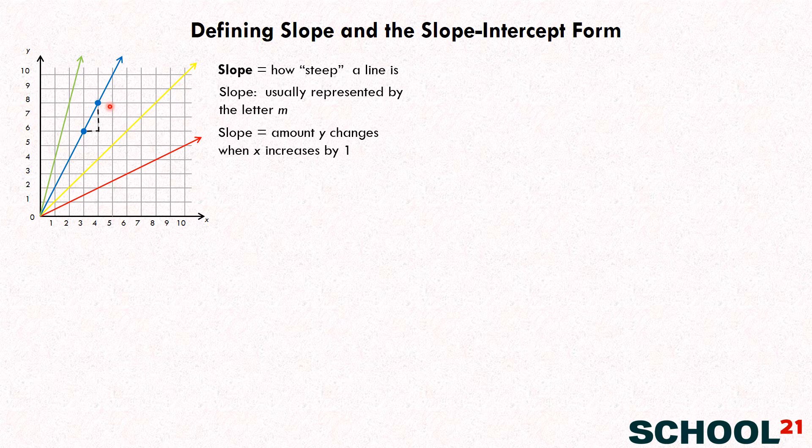So we can write then that X is increasing one, Y is increasing two. So we can write M or slope equals two for that line. Does that make sense? Mm-hmm.